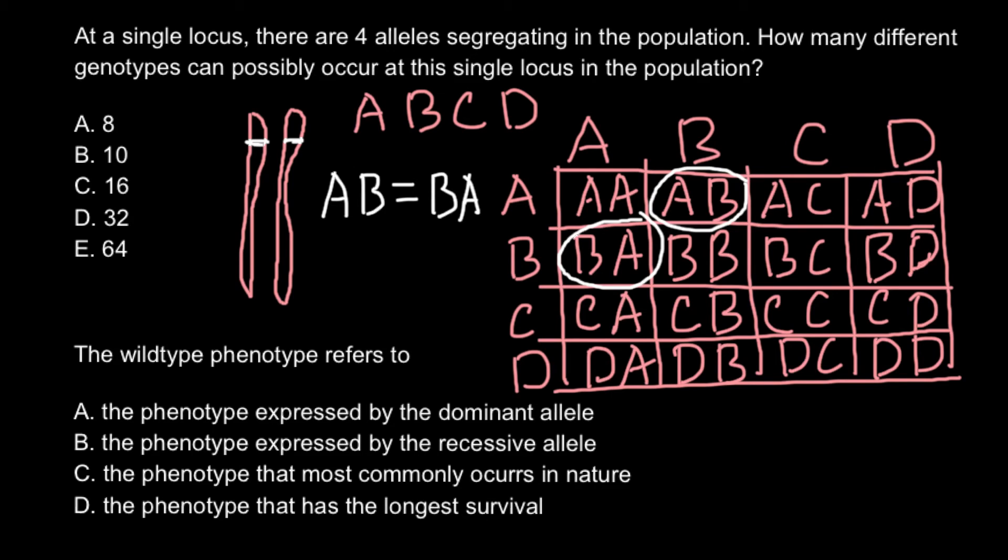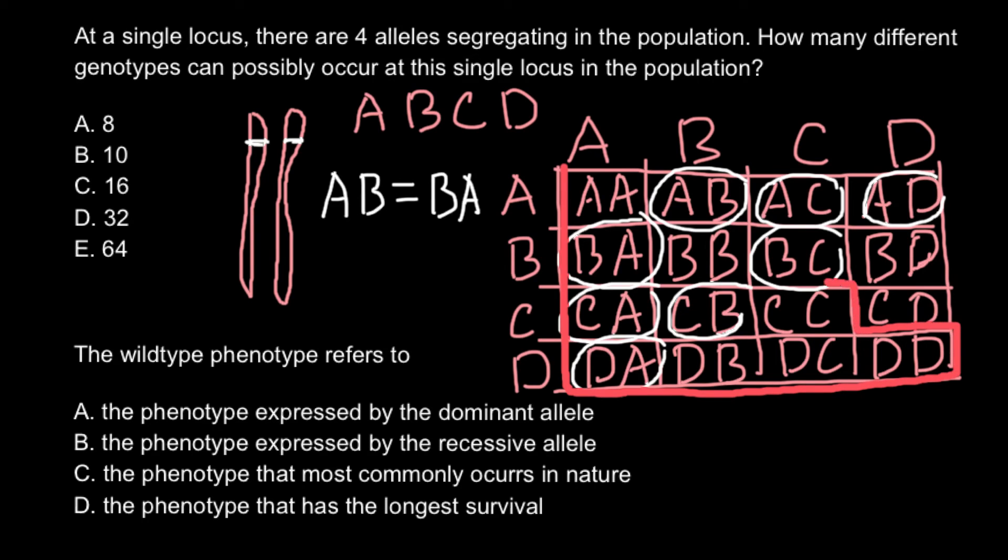And another combination can be, for example, C, B and B, C, or A, C and C, A, and A, D or D, A and D, A here, and so on. So actually what we can do, we can divide this Punnett square and find how many really unique combinations we have here. And this is going to be these combinations here.